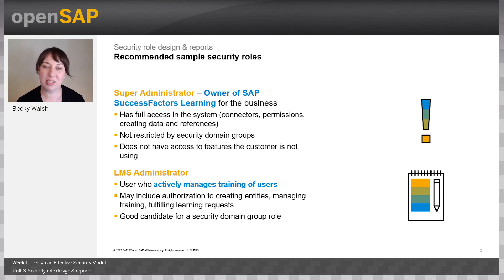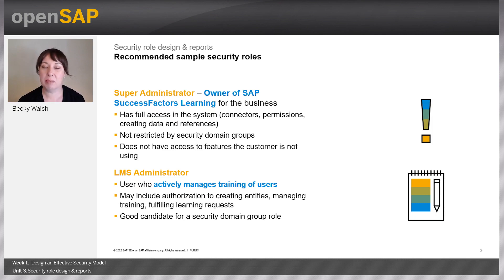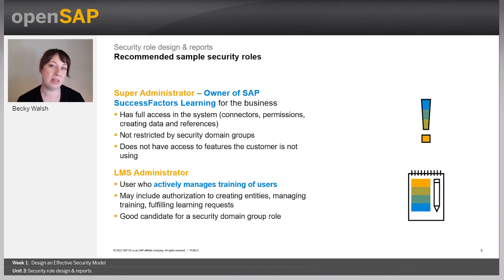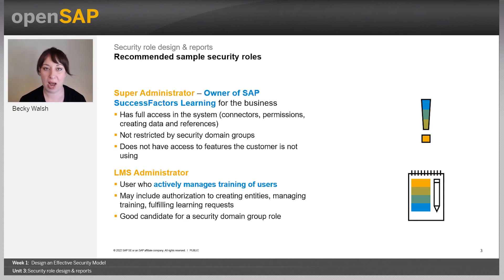First, we're going to talk about some sample security roles. We've got four different examples. The first one would be a super administrator — someone in SuccessFactors Learning who is not restricted to only certain functions. Really anything that the business has enabled in the system, this user would have access to. They would be the system owner for the business, at the highest level, with wide access, and they would actually control access for others within the system.